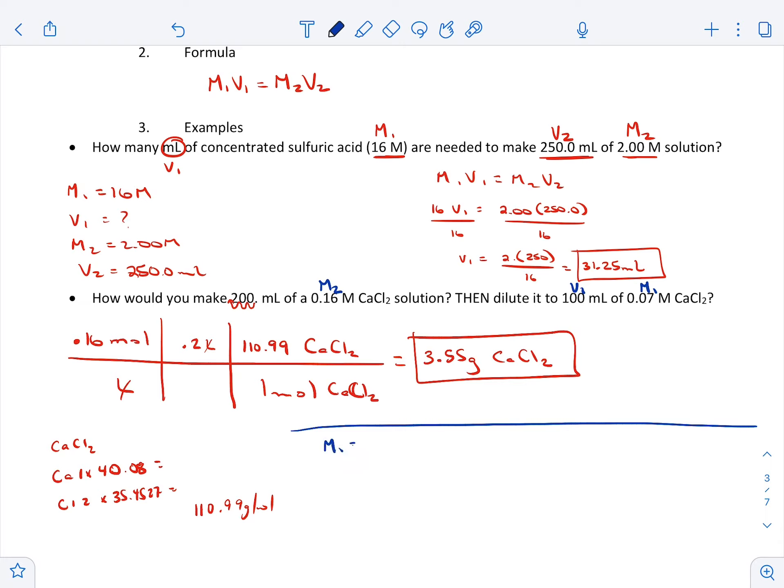So we're going to say M1 is equal to 0.07, V1 is our 100 milliliters, M2 is our 0.16, and V2 is what we're trying to figure out. We're trying to figure out how much of the original solution we need to add to dilute it. All right, so that's our question mark.